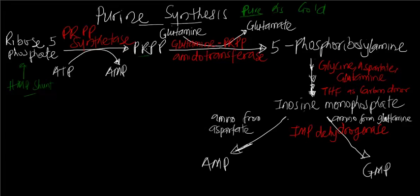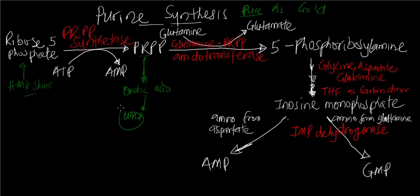From here, the PRPP is going to donate the ribose 5-phosphate, and with glutamine, we are going to form 5-phosphoribosylamine. From the pyrimidine pathway, remember PRPP can also donate ribose 5-phosphate to orotic acid, and that's how we form UMP by the help of UMP synthetase. The enzyme here is glutamine PRPP amidotransferase, and this enzyme is the rate-limiting step. Because it's the rate-limiting step, it's also going to be tightly controlled.